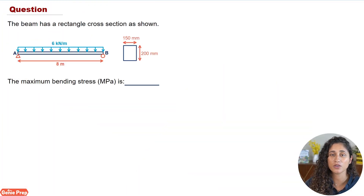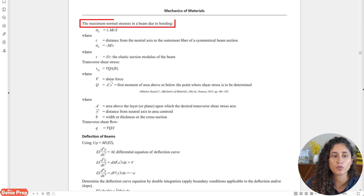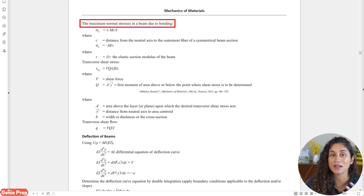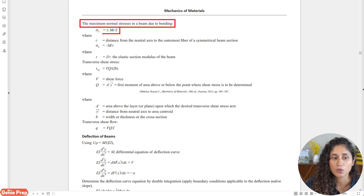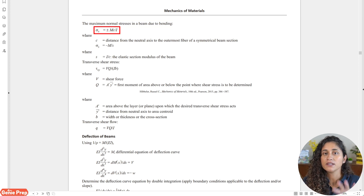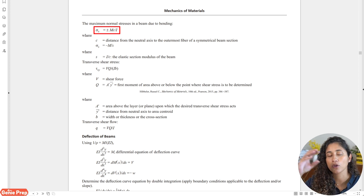The first thing we're going to do is go to the reference manual and look at the equation. It says the maximum normal stress in a beam due to bending — that's the same thing as the maximum bending stress — and that's the equation we're going to use. For the moment, let's ignore the plus and negative sign for now; I'll talk more about it at the end of the problem.